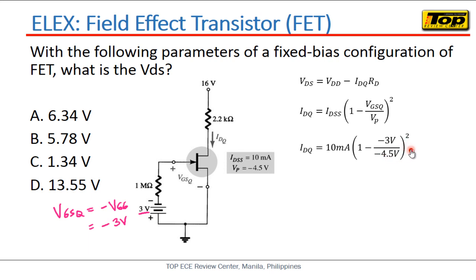Now substitute natin yung IDQ - substitute natin ito dito sa value in getting the VDS. VDD is already given, RD is given, nakuha na natin yung IDQ, so therefore makukuha na rin natin ang VDS and that is 16 volts minus 1.11 milliampere multiplied by 2.2 kilo-ohms and this will give us 13.55 volts.